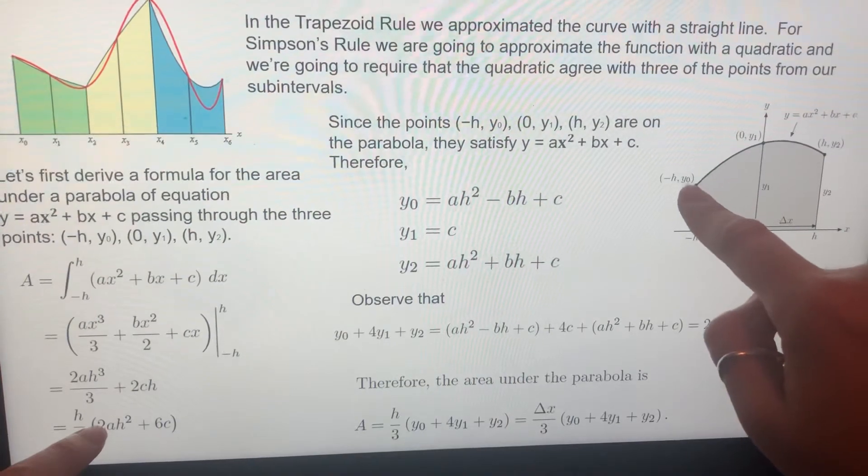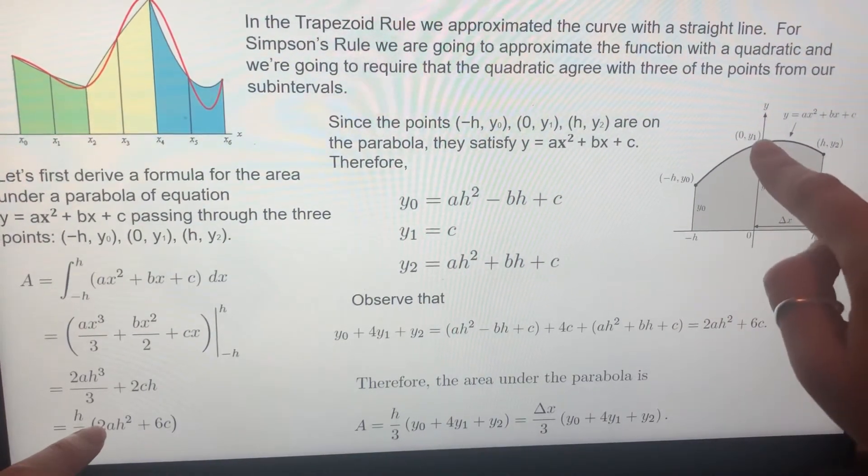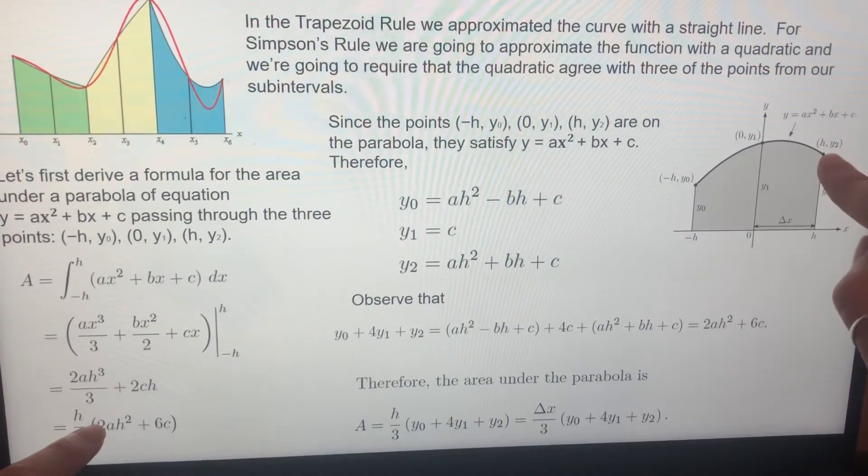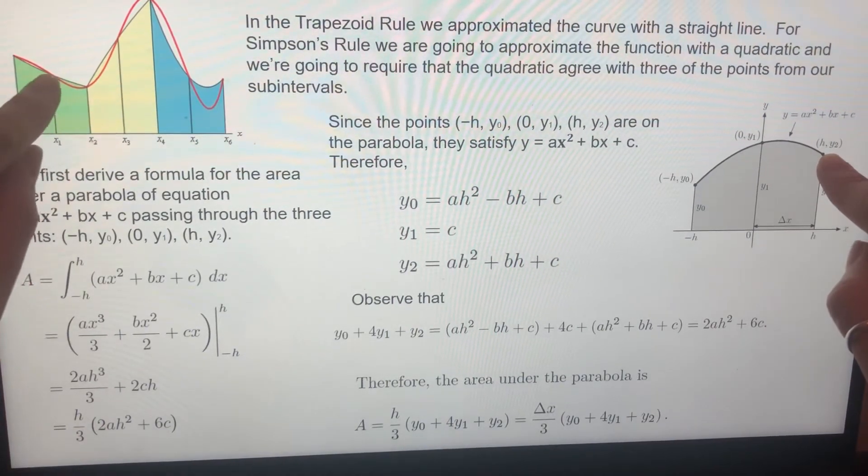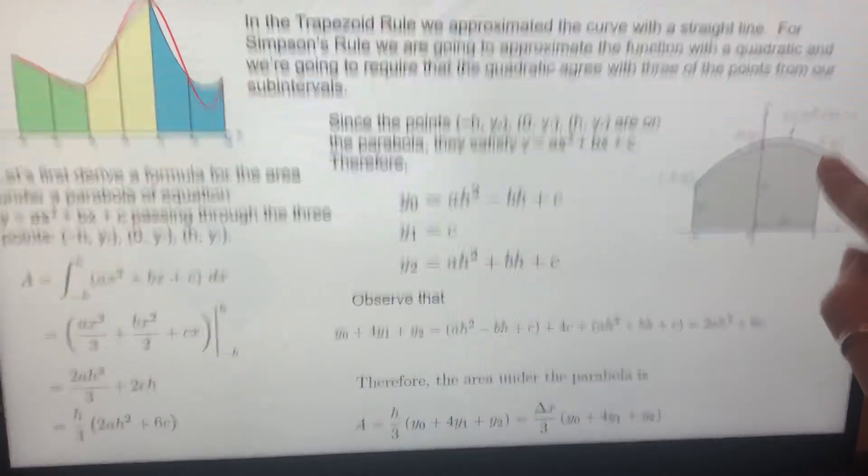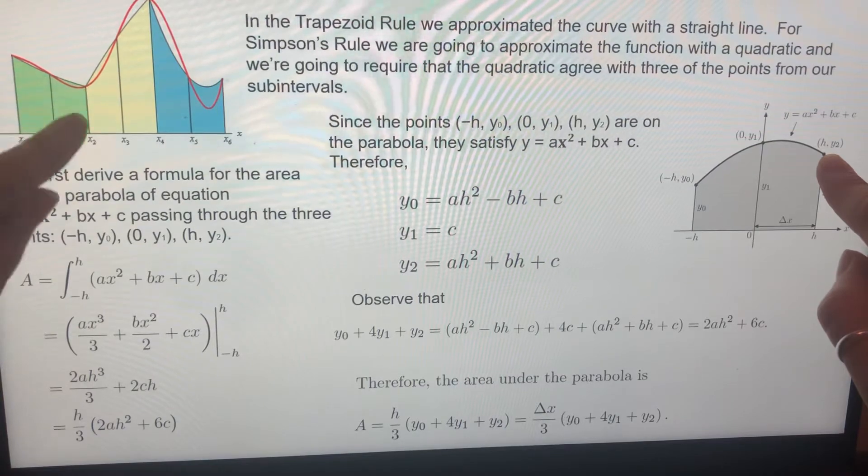What is y zero? y zero is the value at the first point, y one is the second point, y two is the third point. So this is y zero, this is y one, this is y two. This is true for the first quadratic function, first three points.